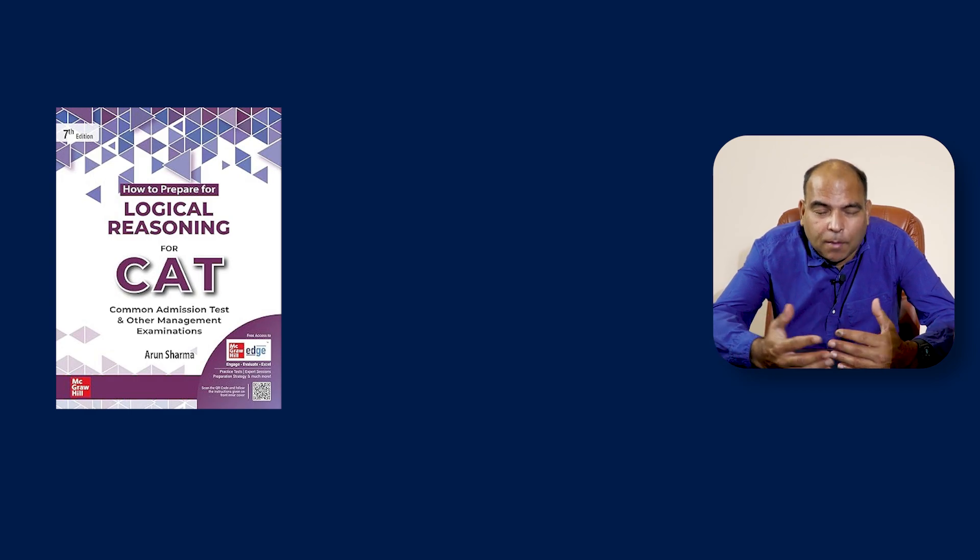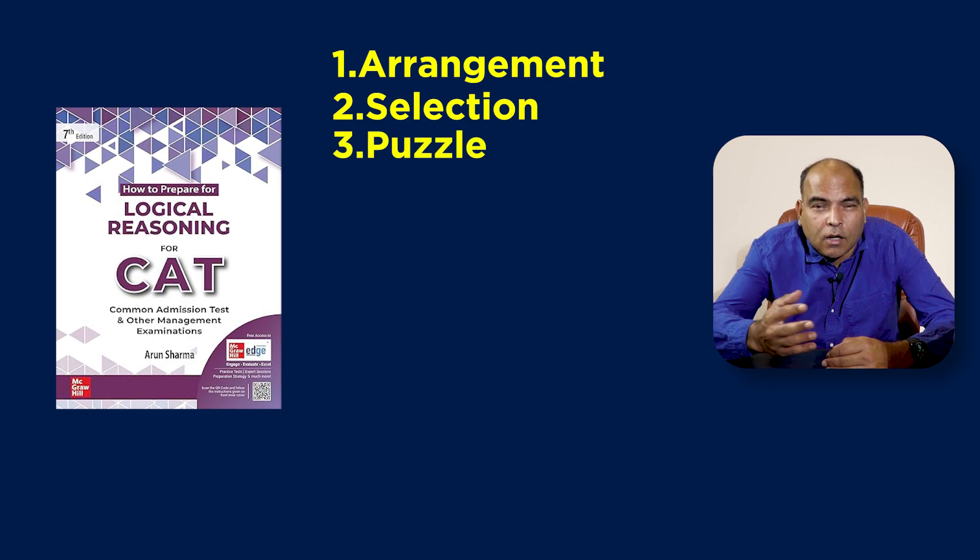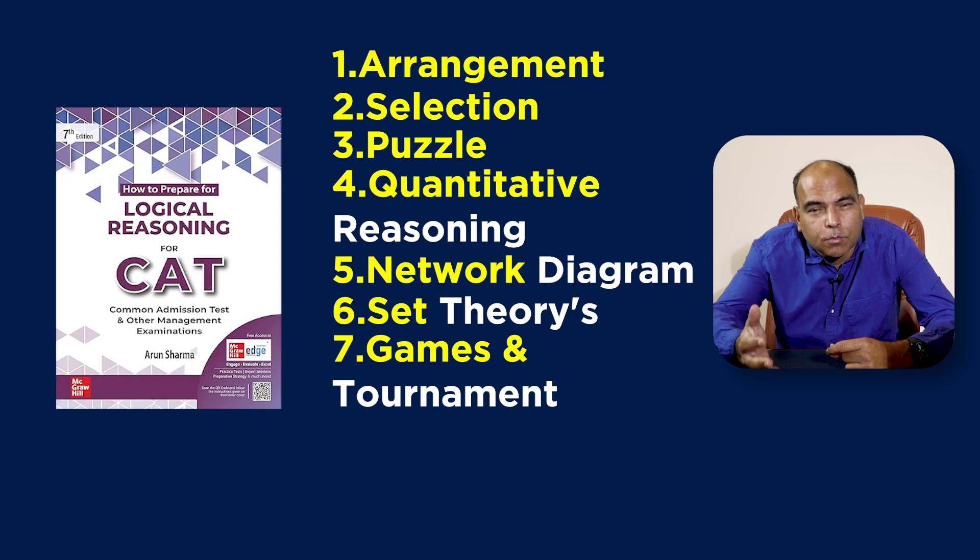What's the roadmap for Logical Reasoning preparation? First, familiarize yourself with typical CAT-kind sets and puzzles. In my book on Logical Reasoning, these are covered in the first eight or nine chapters under headings like: arrangements, selections, puzzles, quantitative reasoning, network diagrams, set theory, games and tournaments, and cubes and dice. The general thumb rule is to do around 20 sets on each of these question types to get into your groove of what LR is all about.